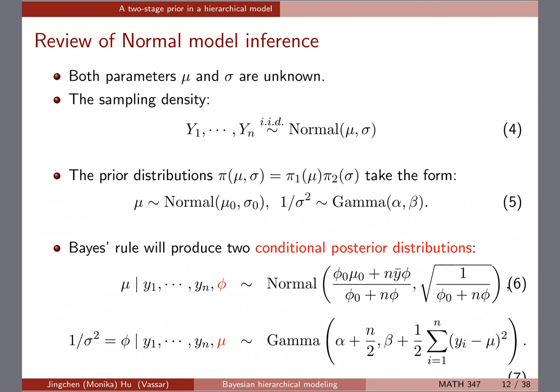Back then we used the Gibbs sampler to get posterior draws for both parameters. First you write the joint posterior distribution of the two parameters, collect the terms for mu conditioning on beta, and get a normal full conditional posterior. Similarly, conditioning on mu, you get a gamma full conditional posterior for sigma, and then you sample iteratively. This is what we know so far.